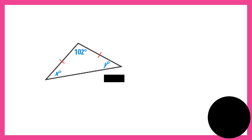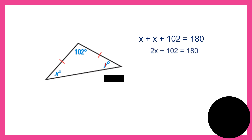We need to find x. We have angles x and 2x. Using the sum of interior angles — x plus x plus 120 equals 180 — so 2x plus 120 equals 180. That gives us 180 minus 102 equals 78, divided by 2. Wait — 2x plus 120 equals 180, so 2x equals 60. The answer is x equals 39.